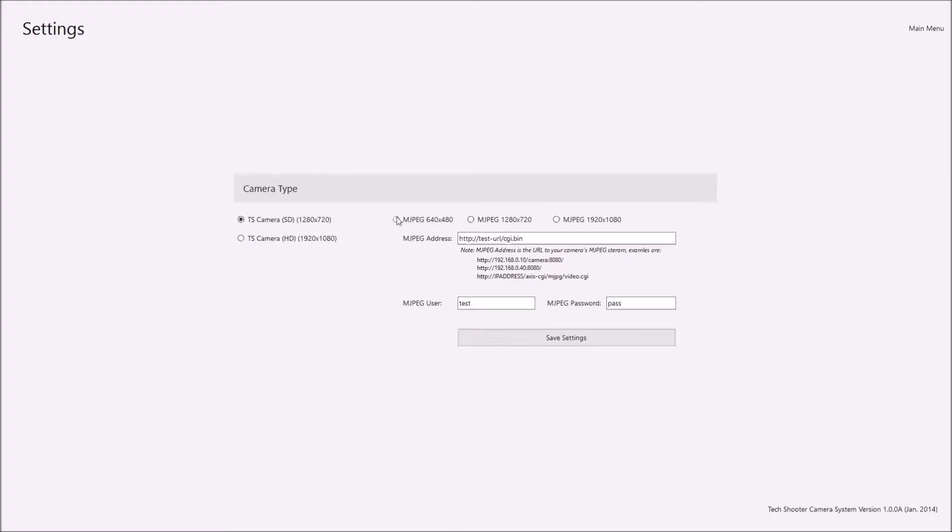The software is also compatible with third-party camera systems, or if you've built your own wireless target camera you can also specify the MJPEG streaming address and use username and password authentication to connect to your own system.